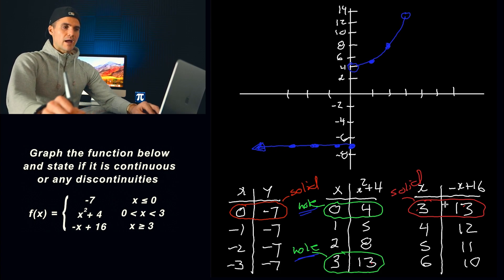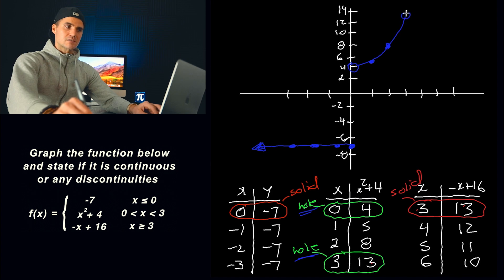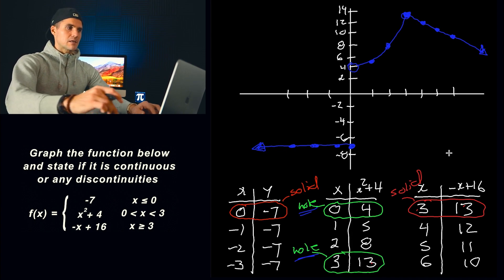And then next, we would have this piece to graph. Now three and 13, that's actually the same point as here, as we mentioned. So we just have to fill in that dot. If this was a different y value, then the function would start there. But it's actually starting where the last piece or the last function ended off. So we just fill in that hole. And then we got four and 12. That's going to be like here. Five and 11. That's like here. And then six and 10. It's just a downward sloping line like that. Negative x plus 16. And so that's basically how this function is going to look.